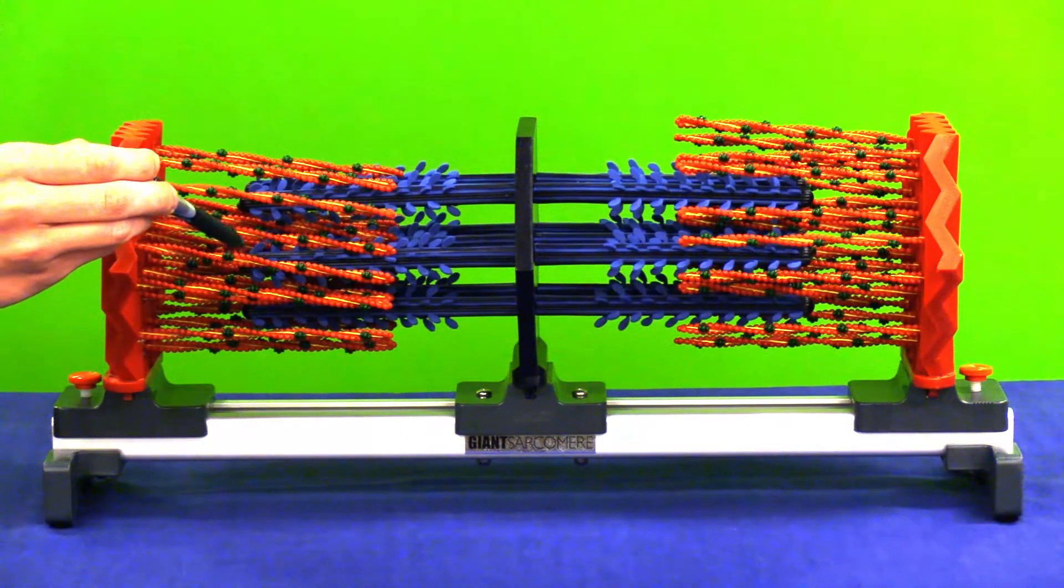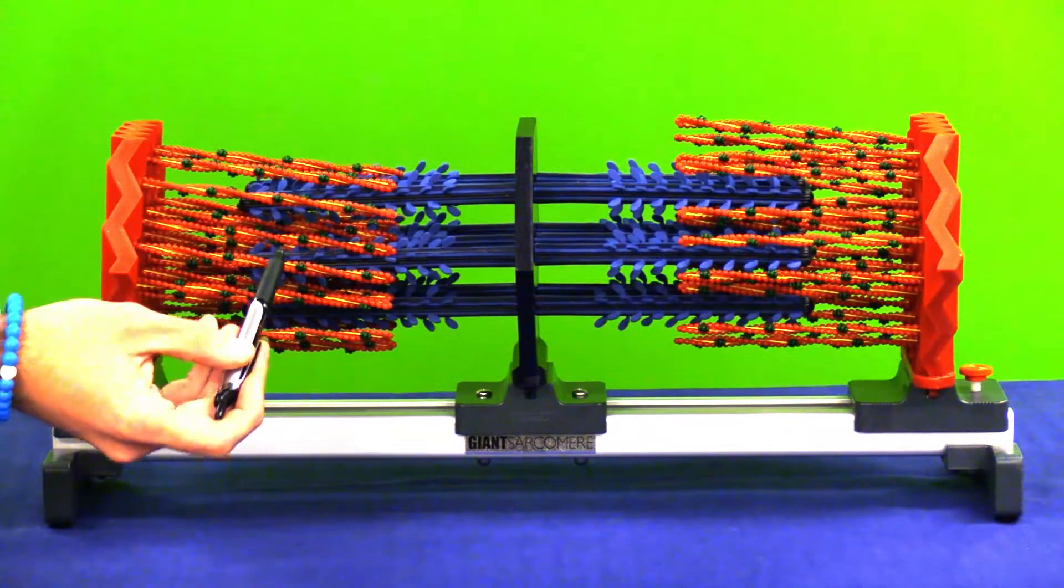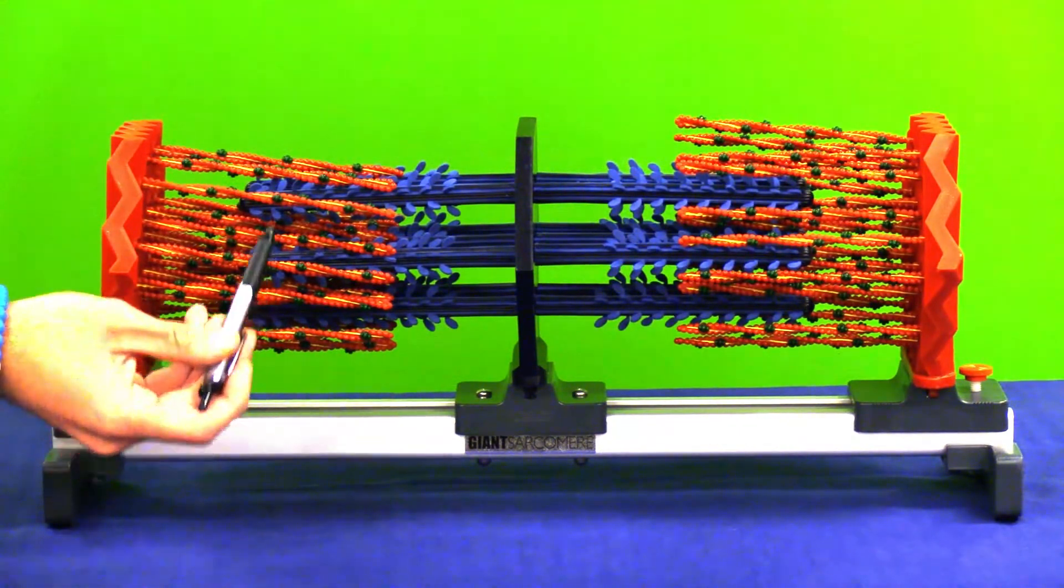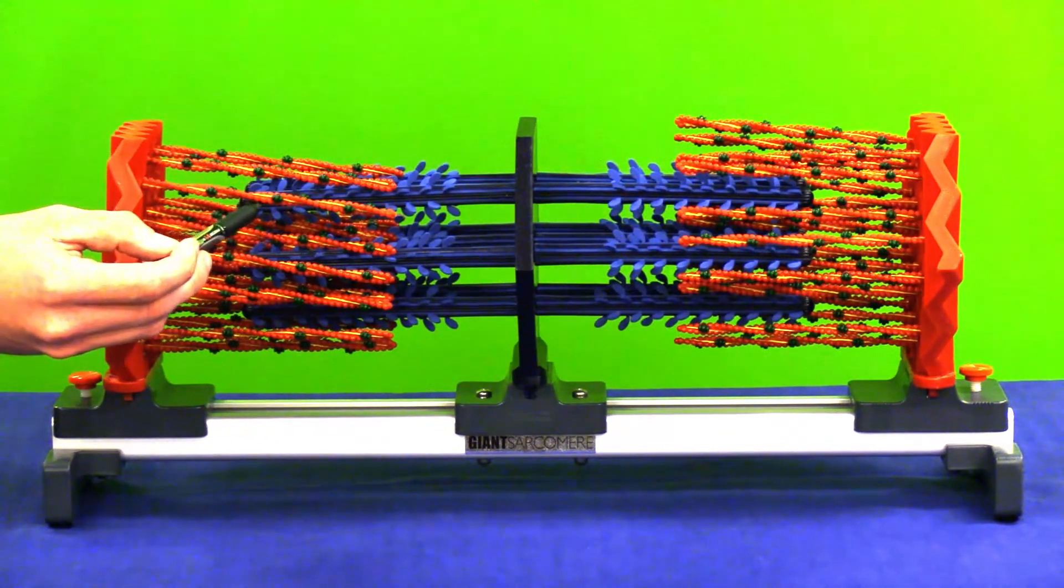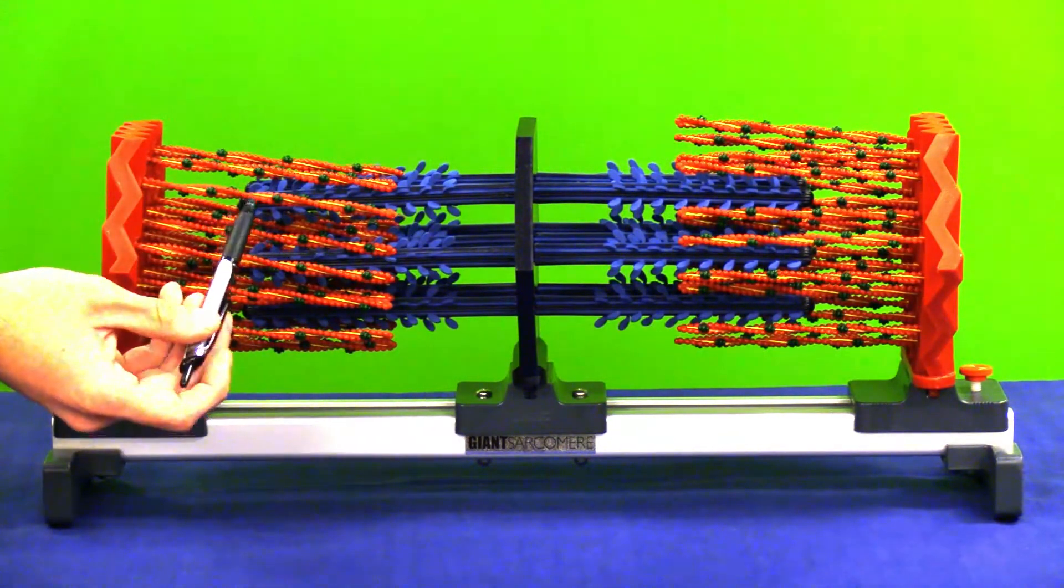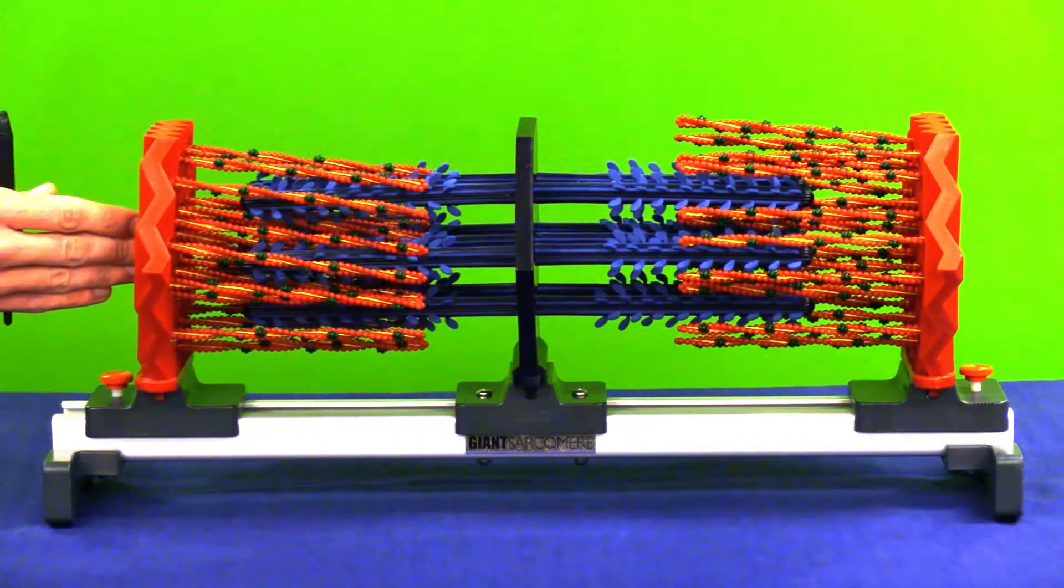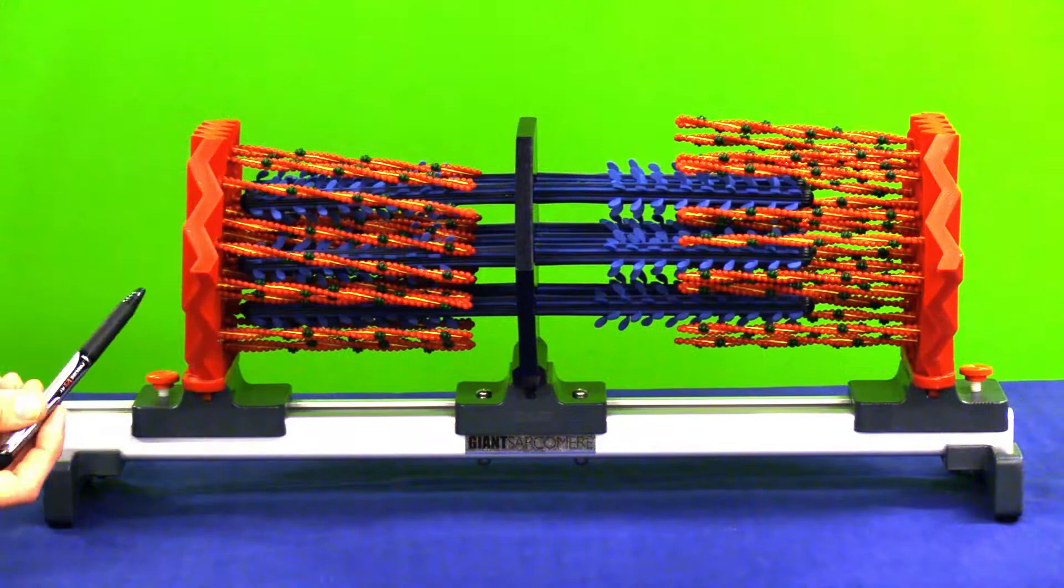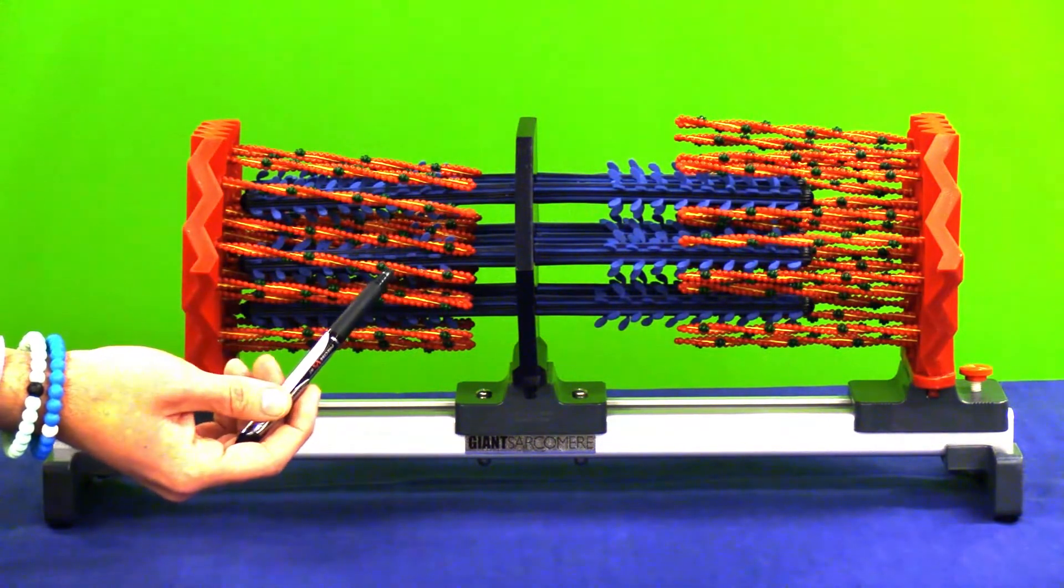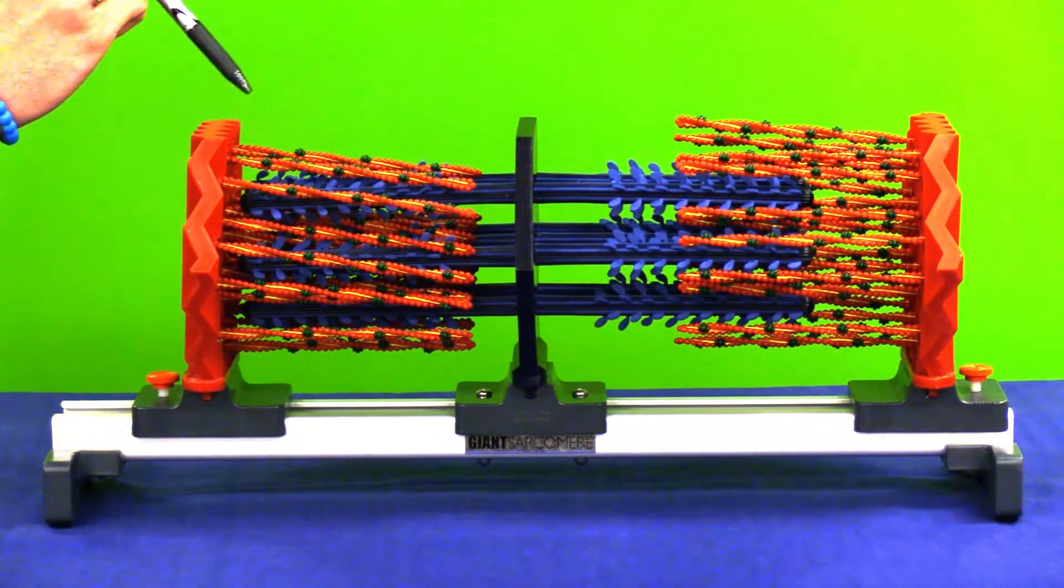As calcium binds to these troponin complexes, that causes this yellow tropomyosin band to change its shape and move out of the way for a binding site for these myosin filaments to attach to the actin filaments. Once attached, these myosin filaments will pull on the actin filaments and they'll slide past each other. In this example, you'll see that as they pull, the filament is getting shorter as we produce force. That concept of the muscle shortening during an act of contraction and force production is known as a concentric muscle action.